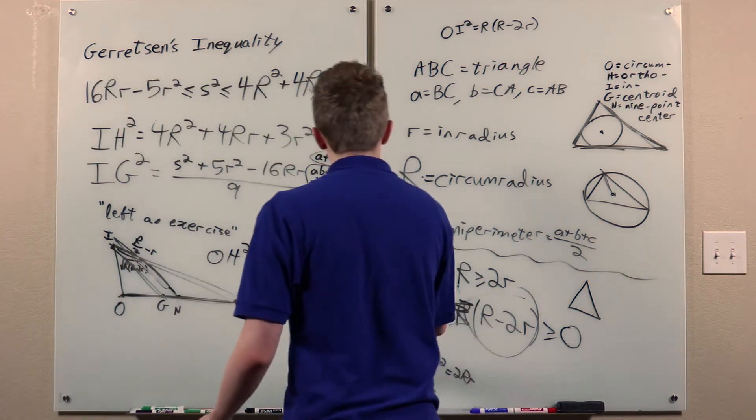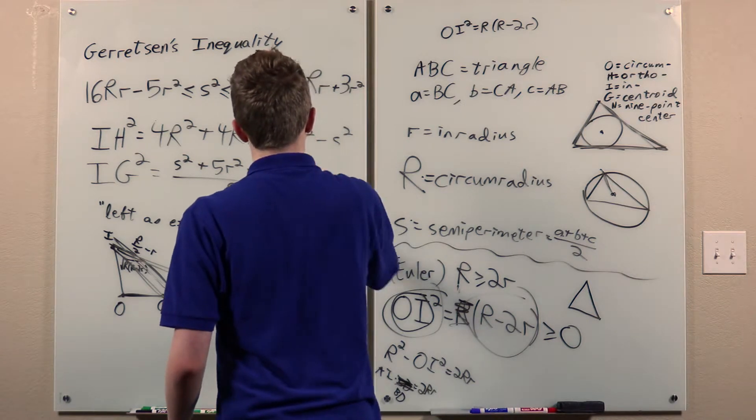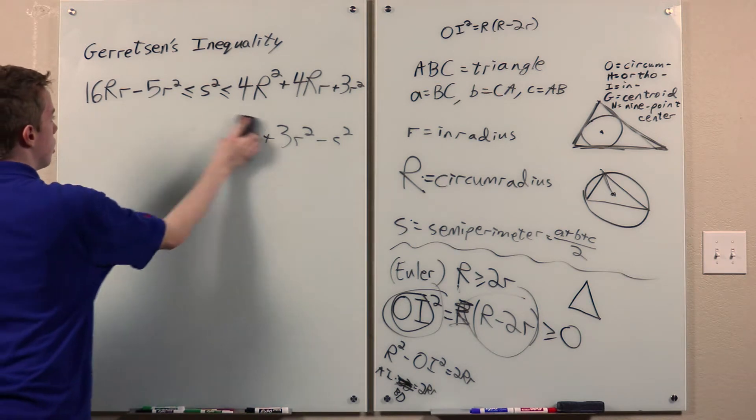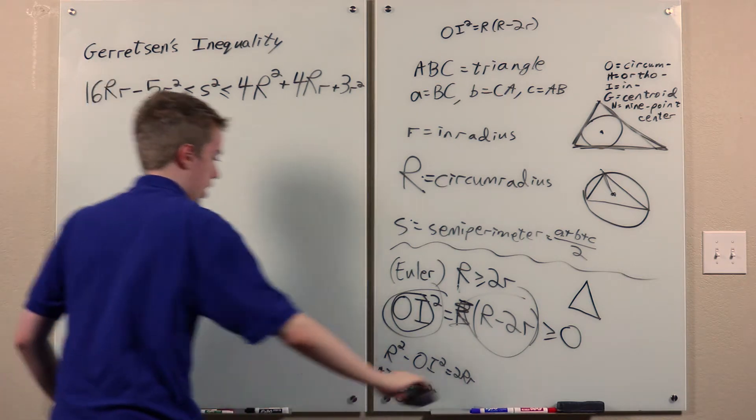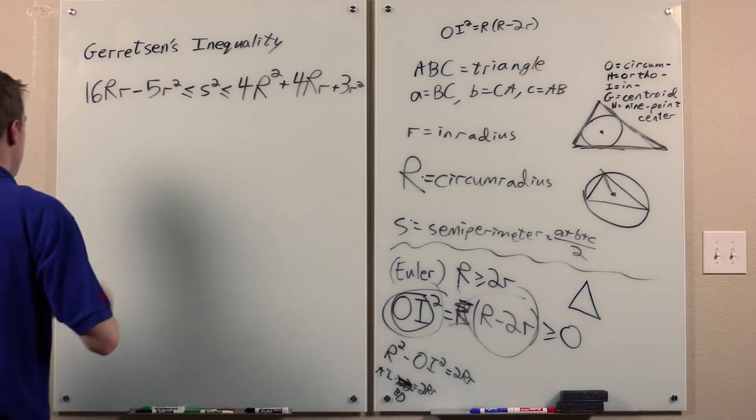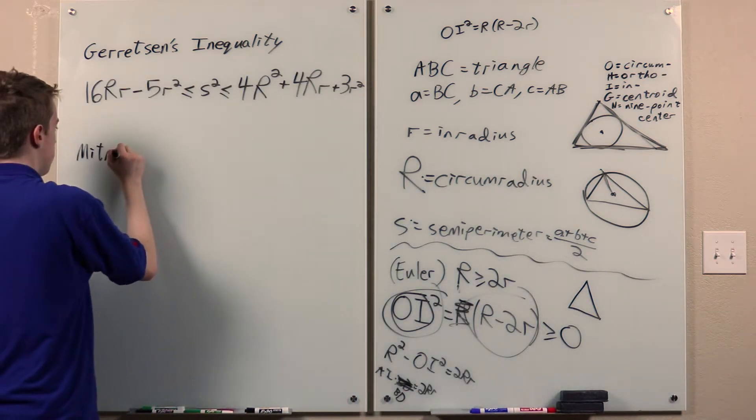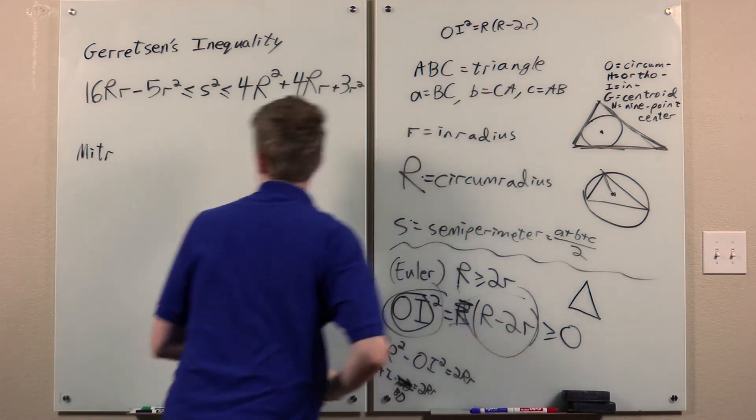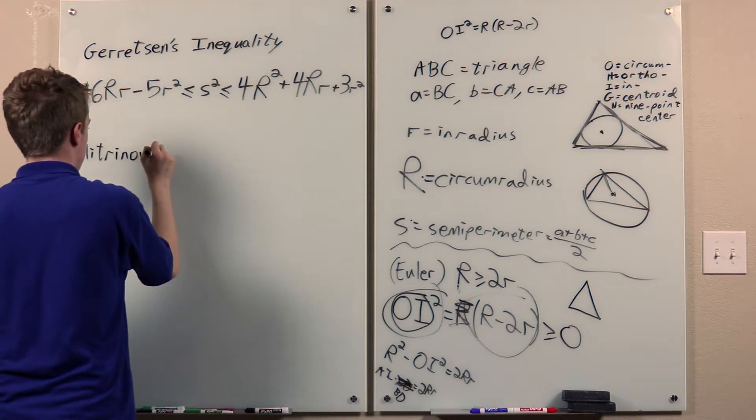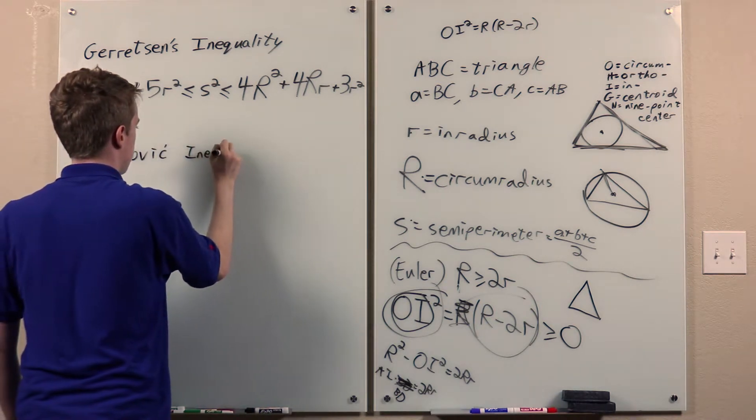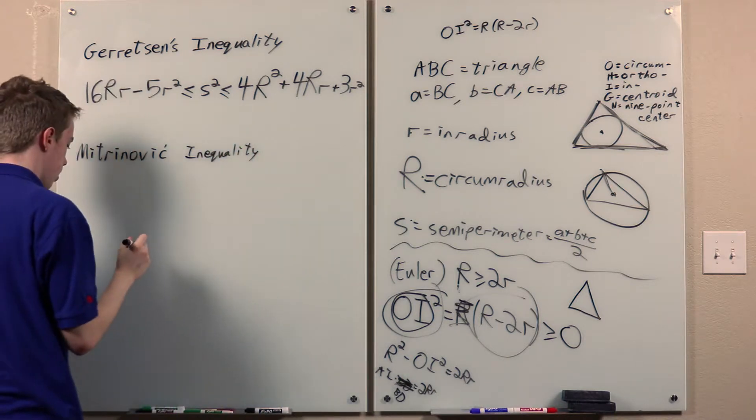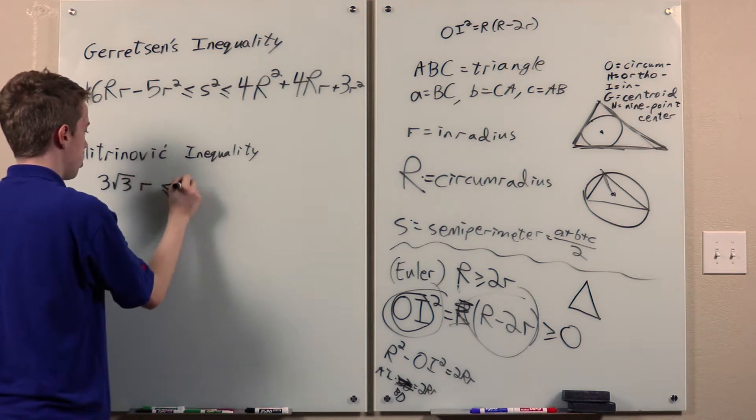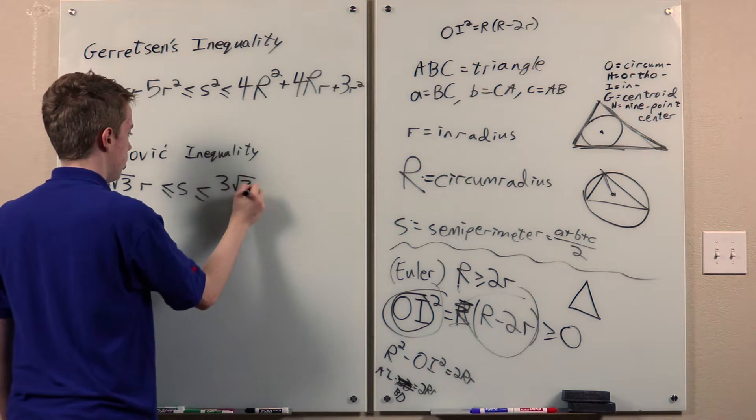And from it, and from Euler's inequality, we can immediately deduce the Mitrinovich inequality, which says that 3 root 3 little r is less than or equal to S is less than or equal to this.